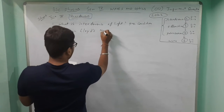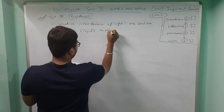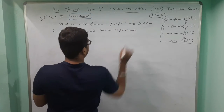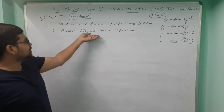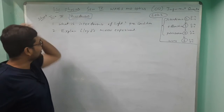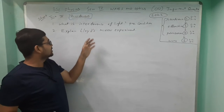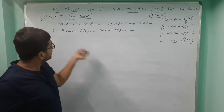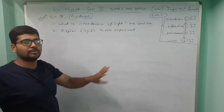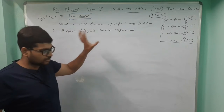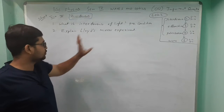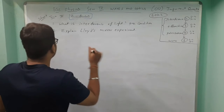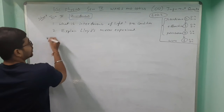For Lloyd's mirror experiment, the diagram should be drawn neatly first. Go for the diagram in the middle of the page, then proceed to the theory part. First remember the diagram, then build up the matter around it — that approach works very well.